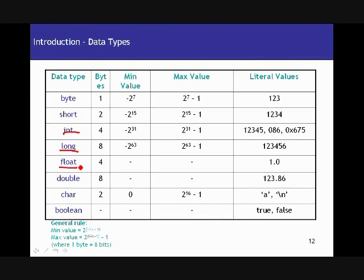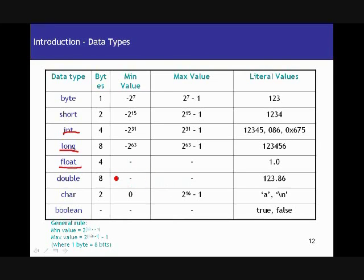The general rule for min and max values is: min value is negative 2 to the power of (number of bits minus one), and max value is 2 to the power of (number of bits minus one) minus one. There are certain exceptions to this general rule. For example, char is an exception — it really doesn't have negative values, and the maximum value is 2 to the power of 16 minus one, since the number of bits is 16. Float and double don't follow the same min/max formula. Boolean is also a special case — it has only two values: true or false.